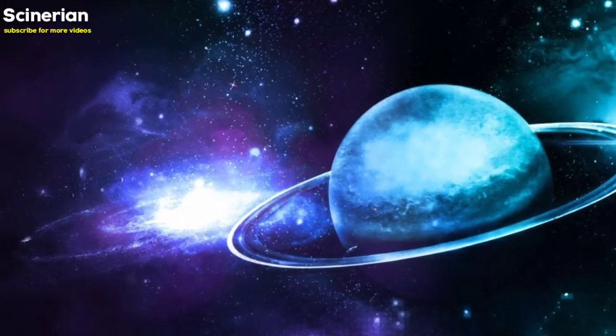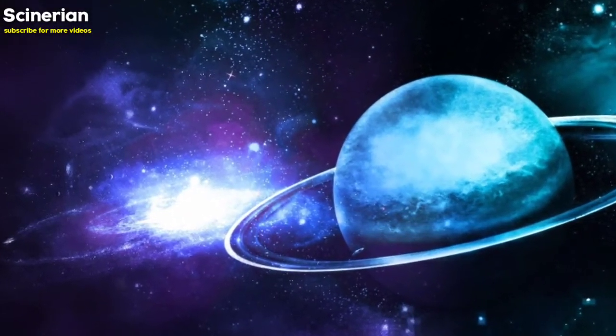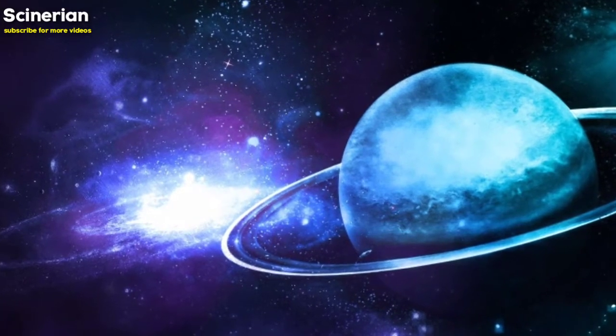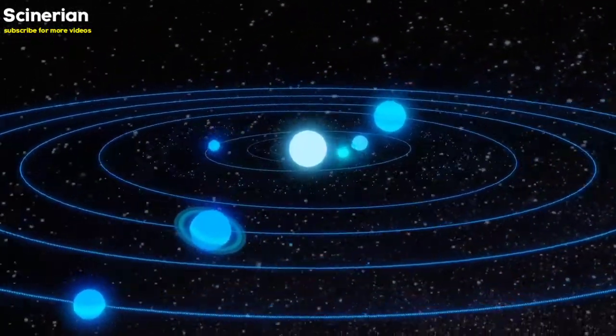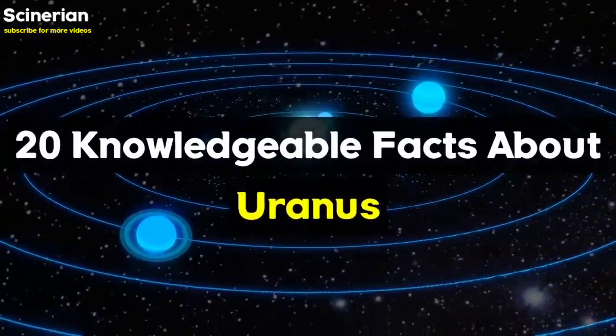Uranus is the coldest planet in the solar system. Do you know the distance between the sun and Uranus? Hello friends, we are going to share with you the answer to some similar questions in today's video.